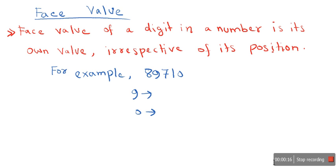Face value of a digit in a number is its own value, irrespective of its position—that is, where it is located in the number. Now let's see with an example.